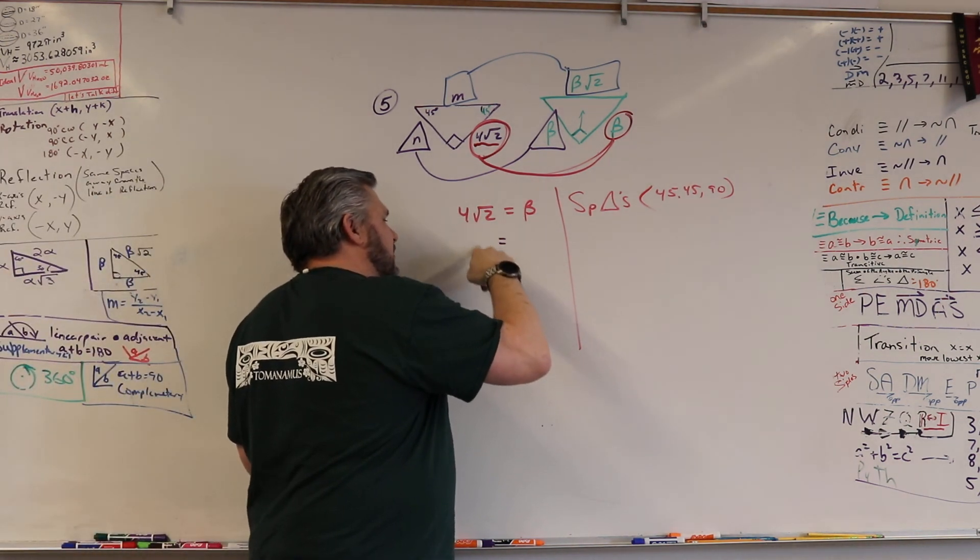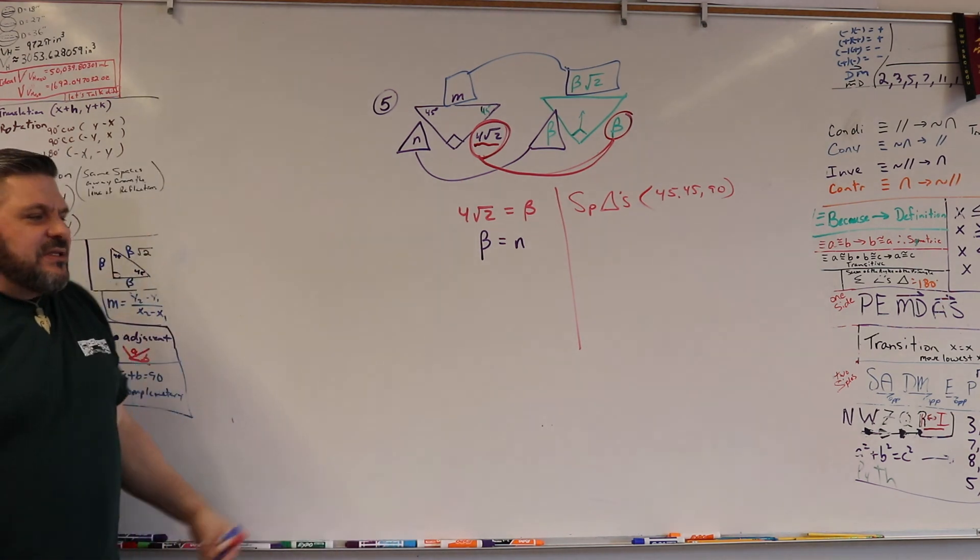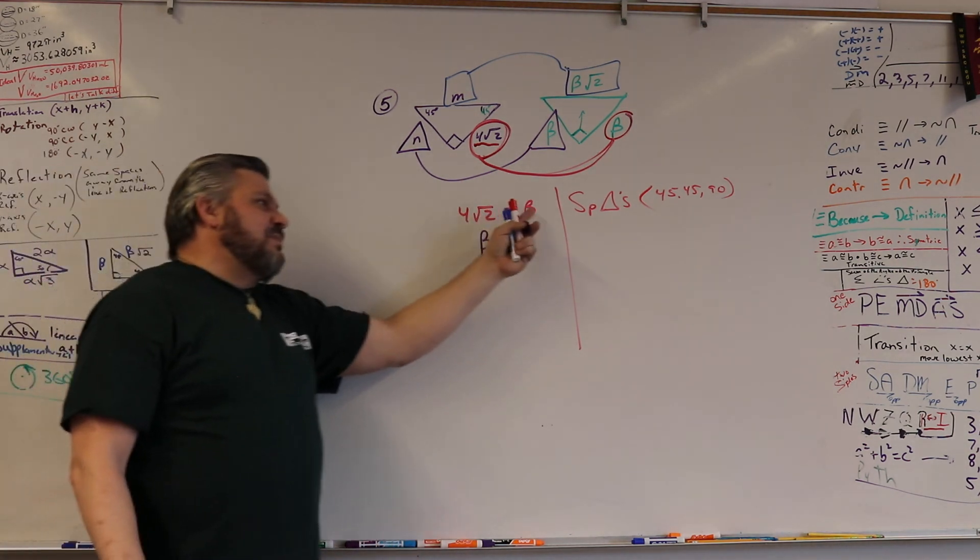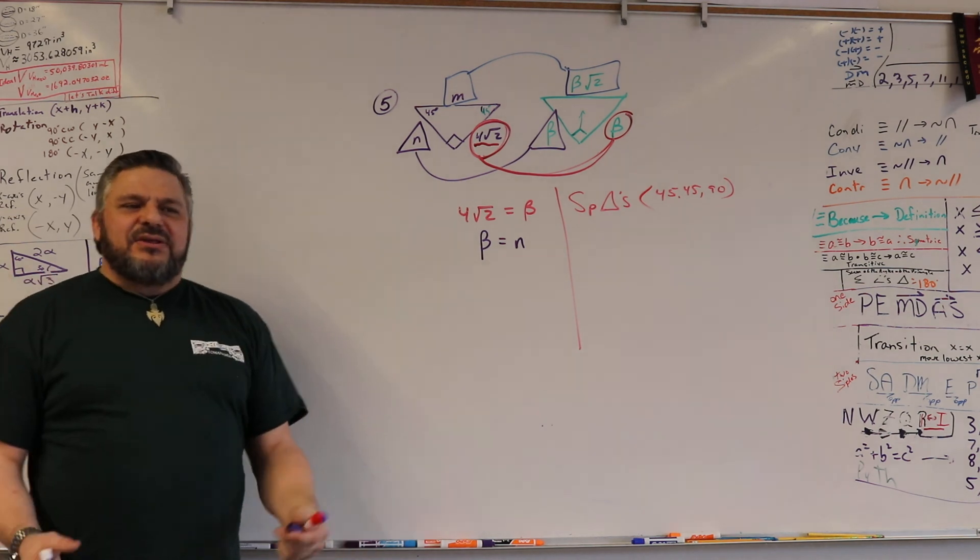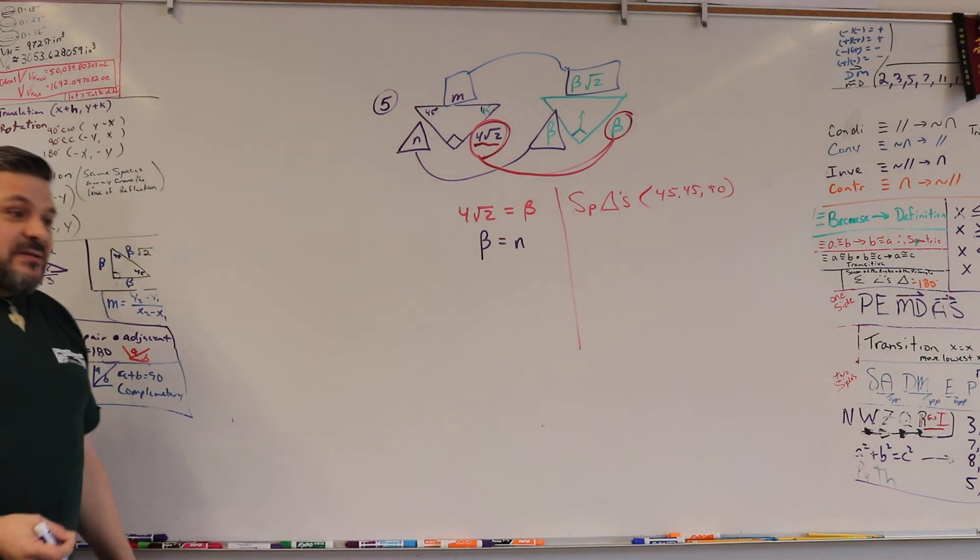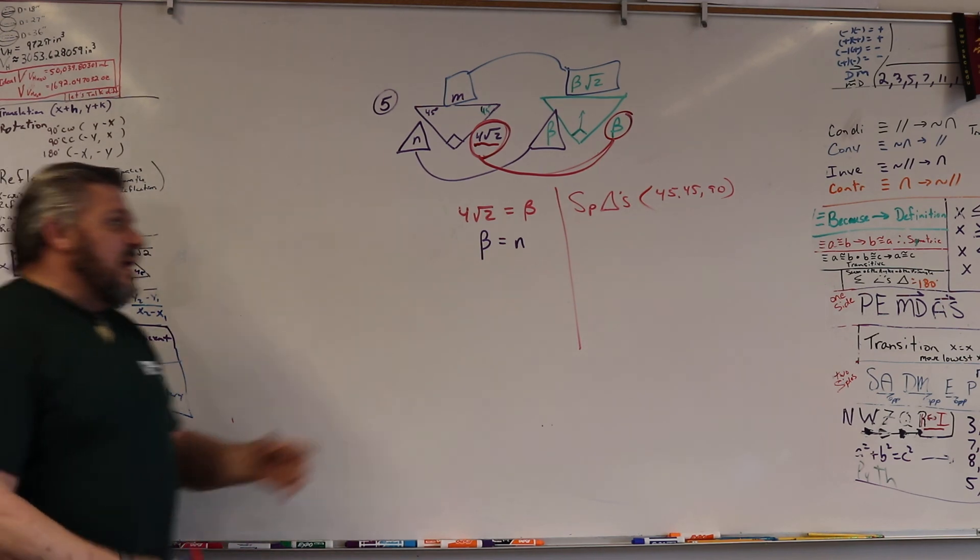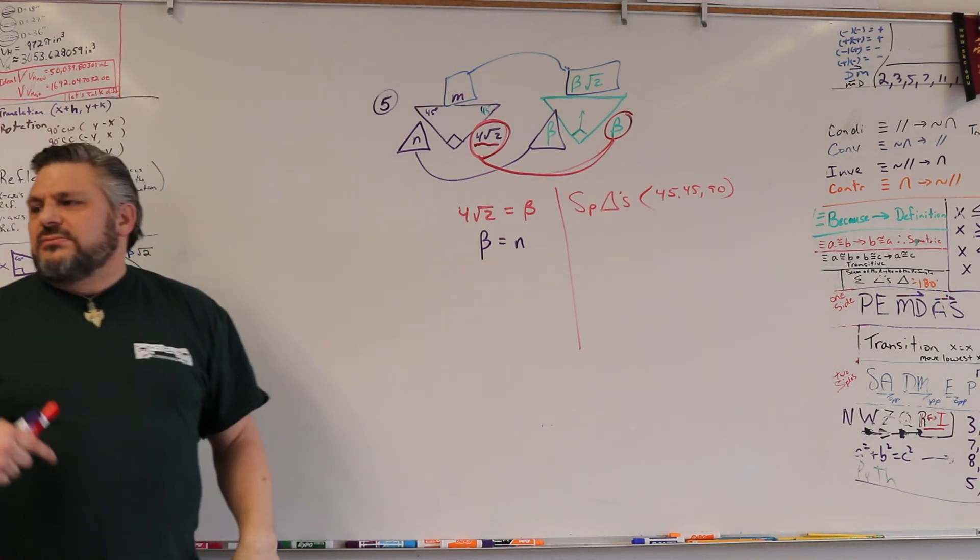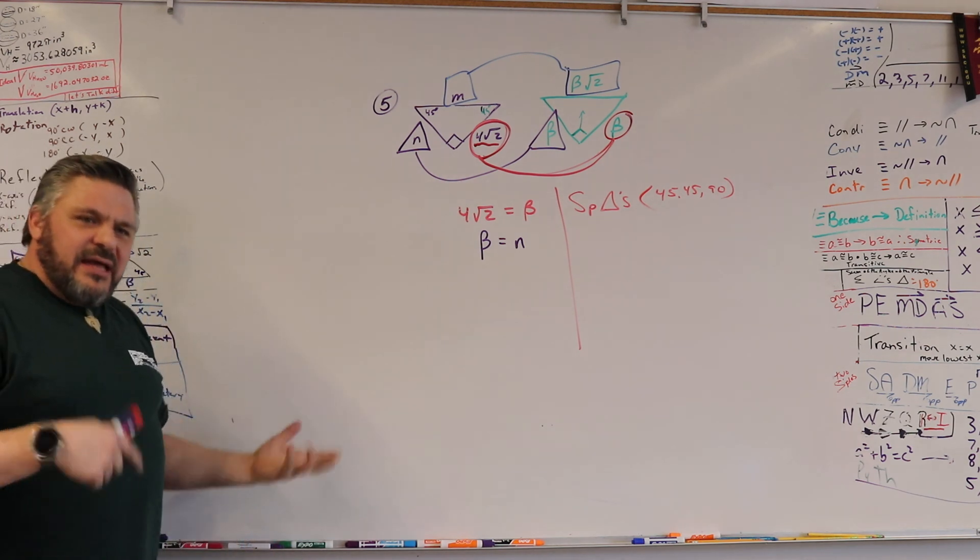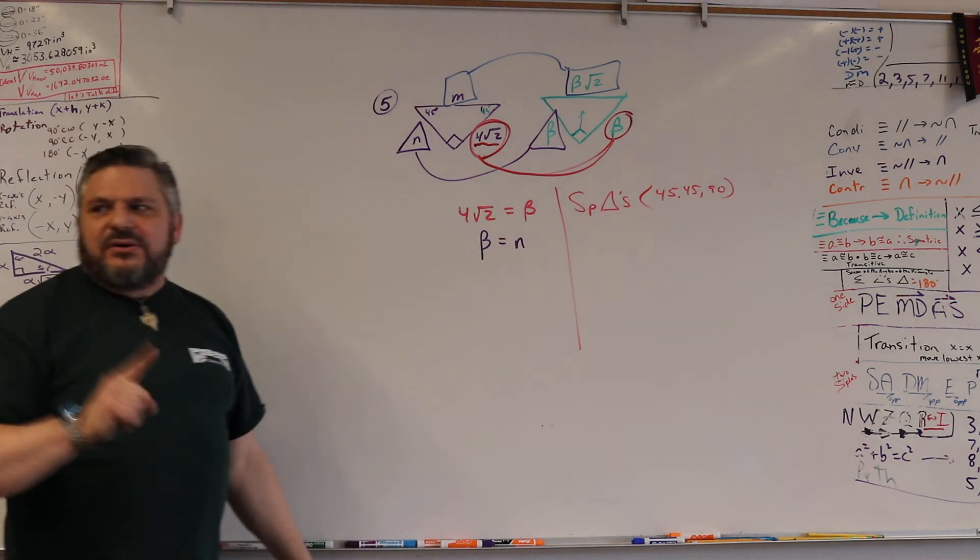Does anyone have a reason that I would want to do this? This is the transitive property. If A equals B and B equals C, then A equals C. Transitive. Very beginning of the year. I guarantee that will be on the state test. Transitive property is always on the state test. So it's kind of nice to know how to set it up that way. Now I can just write it that way. I didn't have to use my symmetric property to twist it.